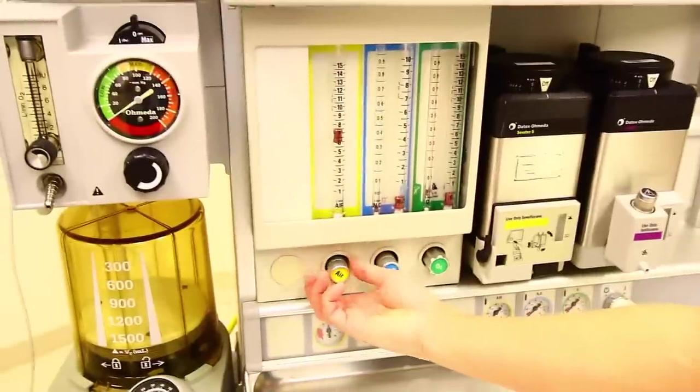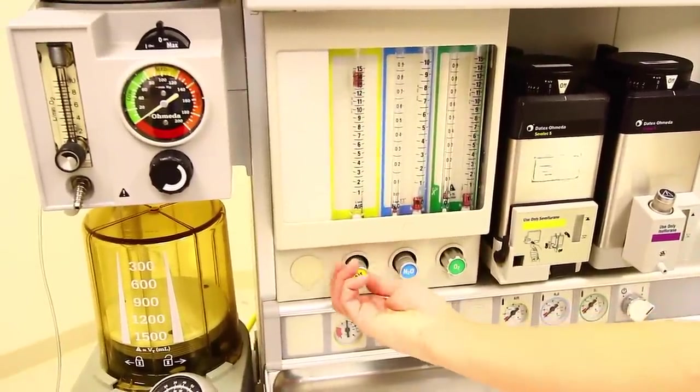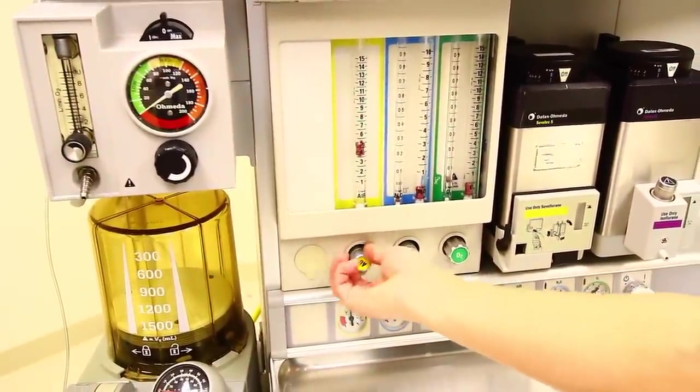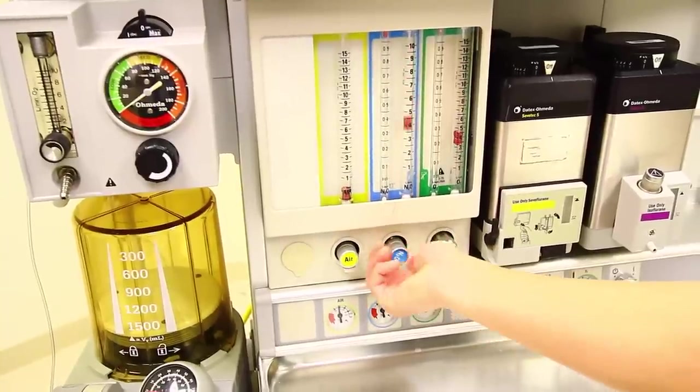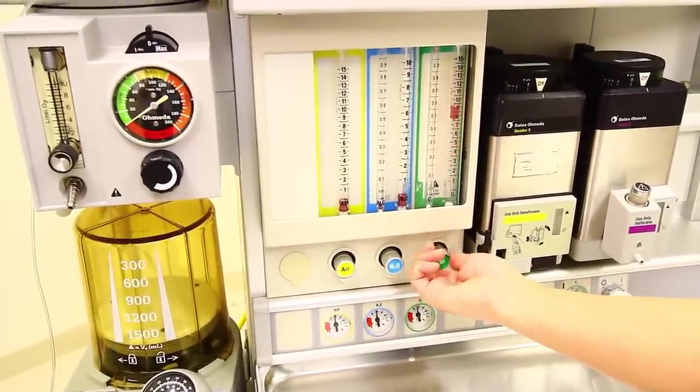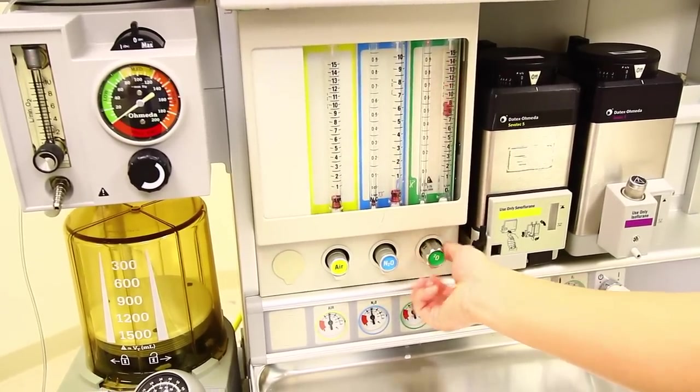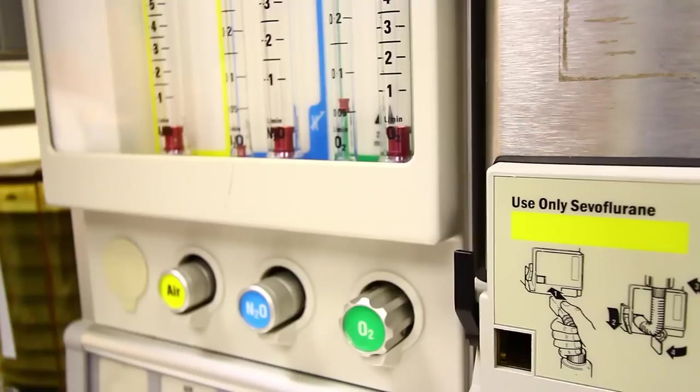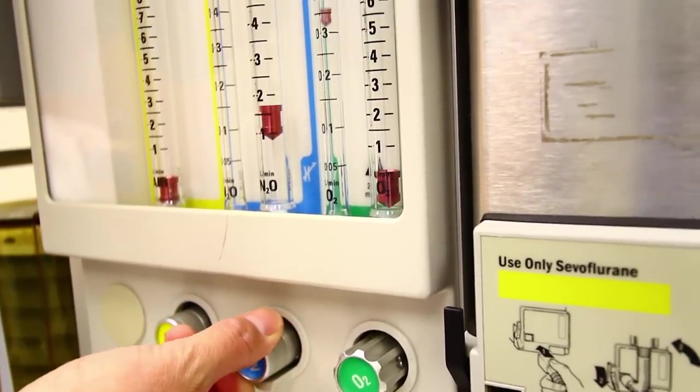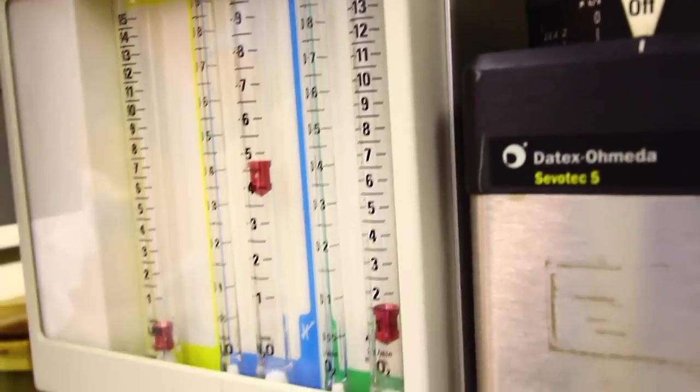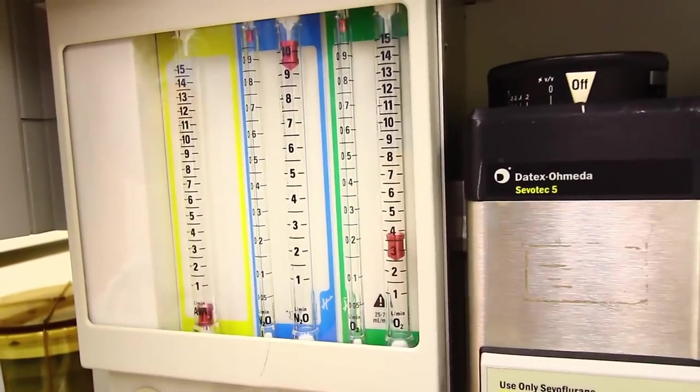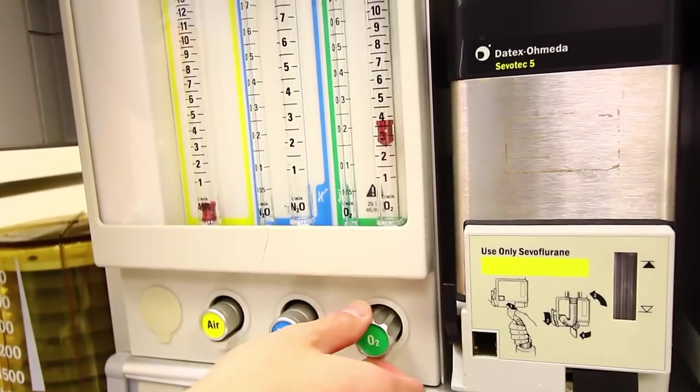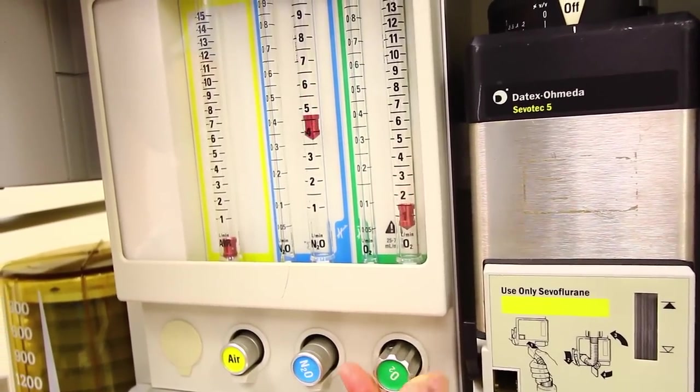The next thing you want to do is test the flow meters. Adjust them through their full range to ensure smooth operation. Attempt to create a hypoxic oxygen to nitrous mixture and verify correct changes in flow and/or alarm. Notice the nitrous knob turns automatically as the oxygen flow is decreased.